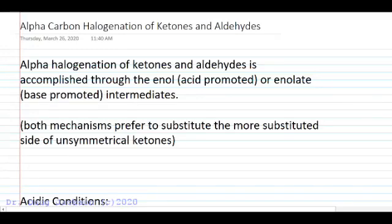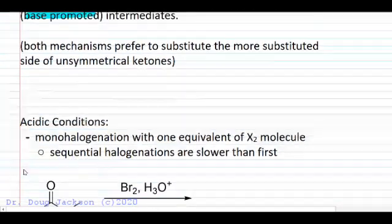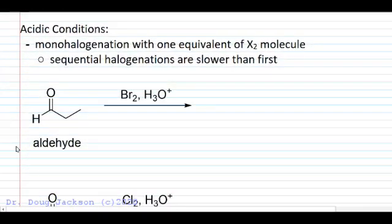Let's talk about alpha carbon halogenation of ketones and aldehydes. We're going to go through either an enol in acid-promoted conditions, or an enolate in base-promoted conditions. Both mechanisms will prefer to substitute the more substituted side of unsymmetrical ketones first. Let's define alpha halogenation with our simplest reaction, just an aldehyde.